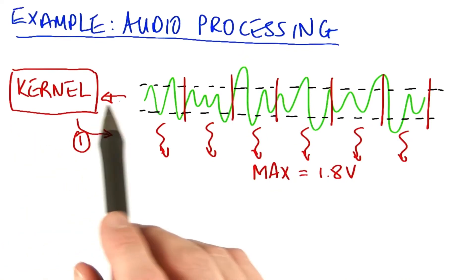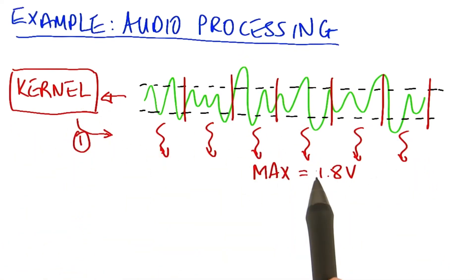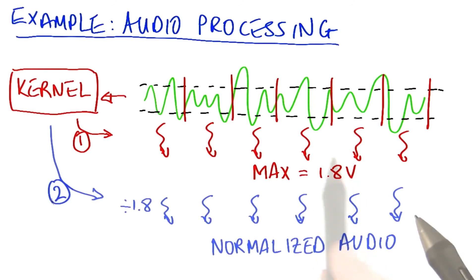The first step would be to find the maximum peak value in parallel, say, 1.8 volts. So having found the maximum peak voltage, my kernel would then launch a second kernel, which would rescale everything by the 1.8 volts to end up with a normalized 1 volt peak-to-peak audio.